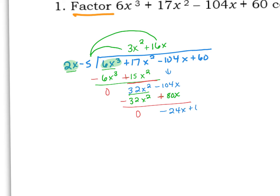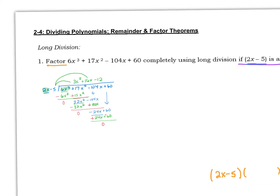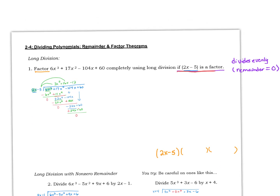I'm going to bring down that plus 60 and divide again. I'm thinking about how many times 2x can go into negative 24x — 2x times negative 12. When I multiply, I get negative 24x and plus 60. I switch these signs so they become plus and negative, and I've gotten a remainder of 0. Because this problem tells us that 2x minus 5 is a factor, it should divide evenly.